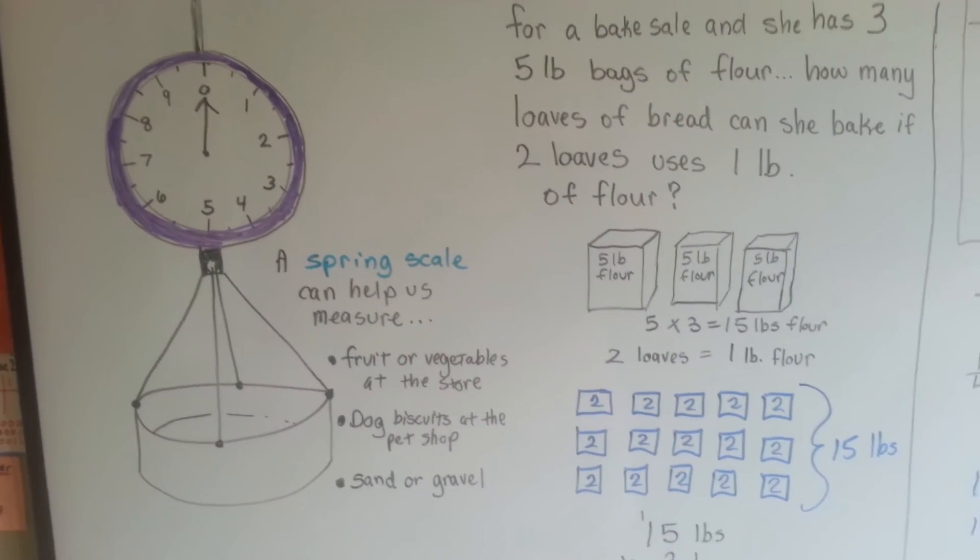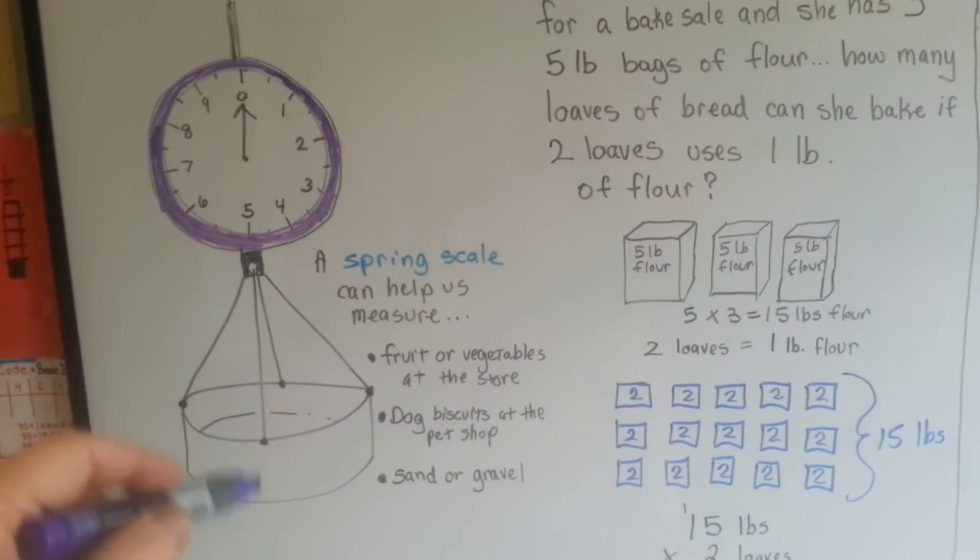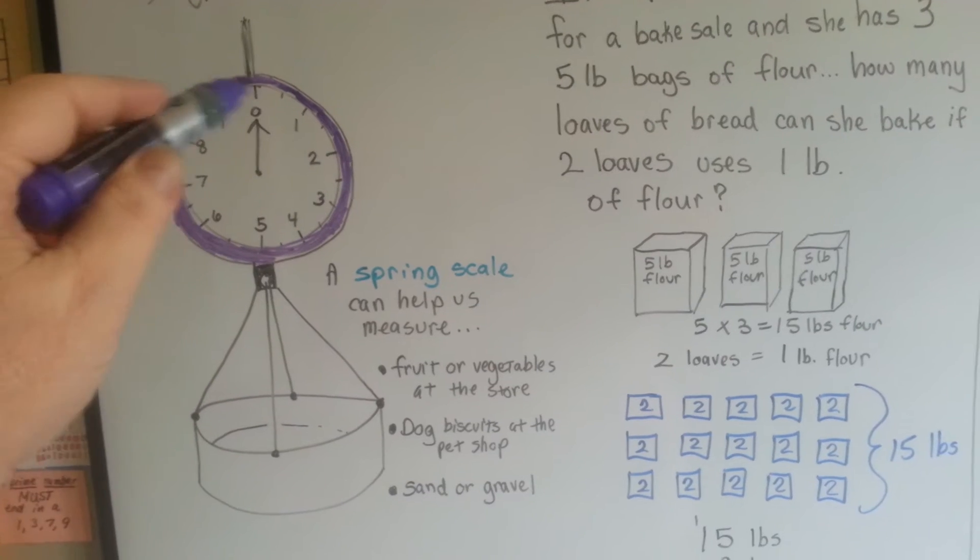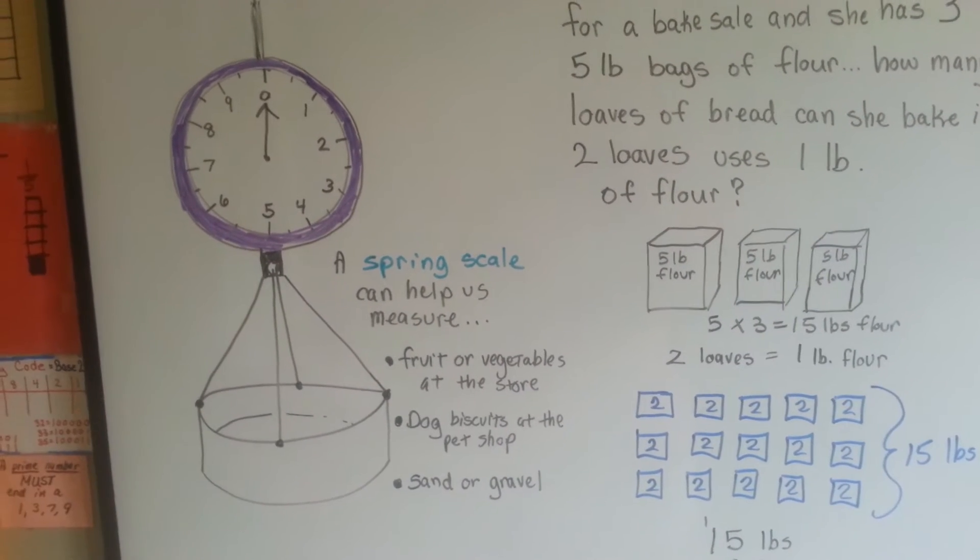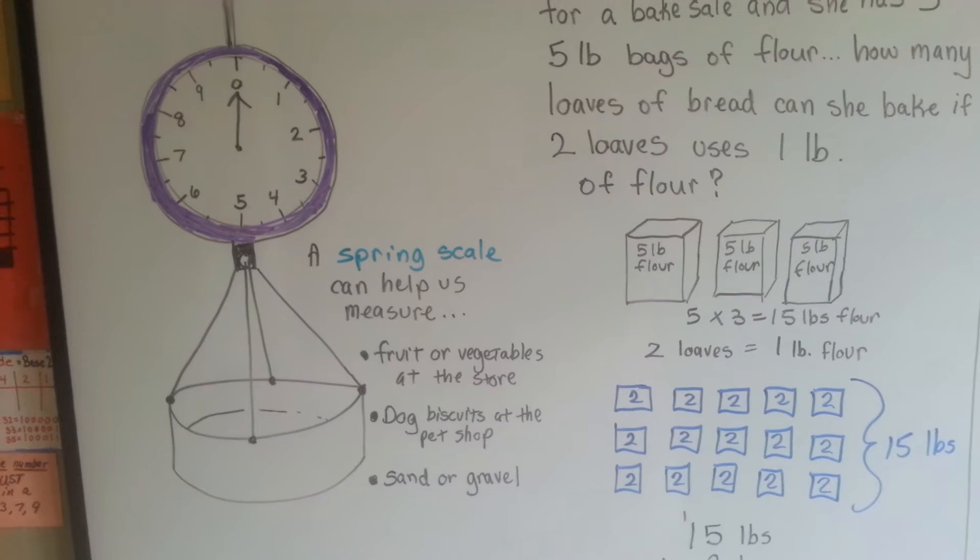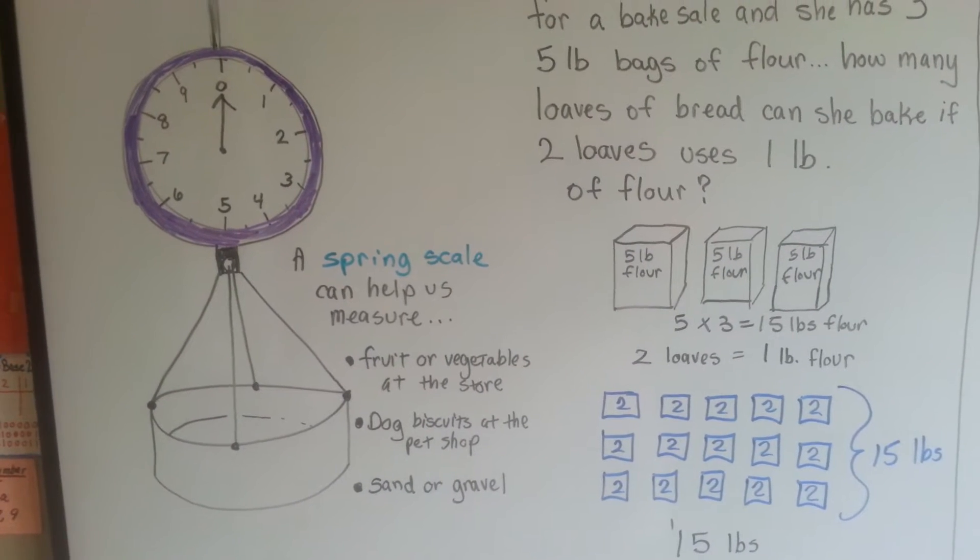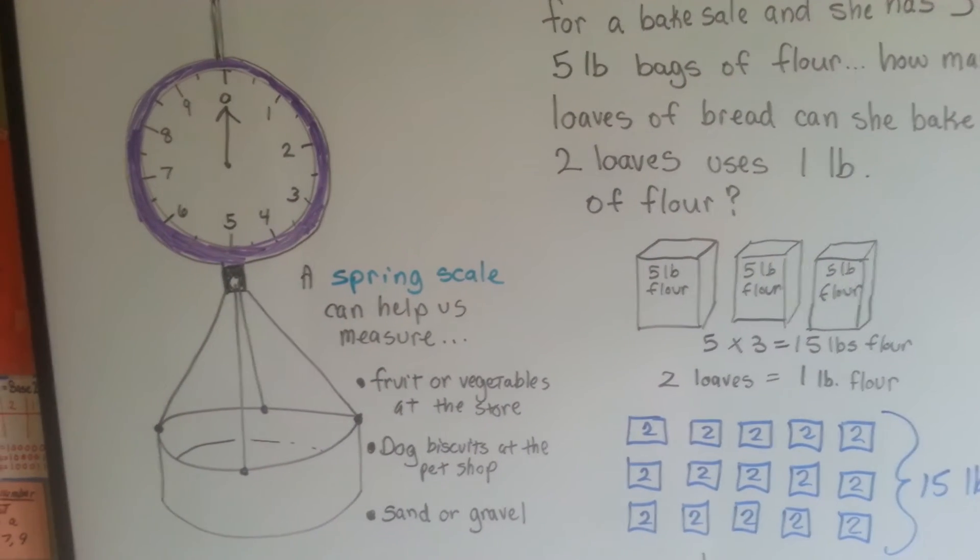Have you ever been at the grocery store and seen a scale that looks like it has a clock on it? Well, that's a spring scale. It can help us measure fruits or vegetables at the store, dog biscuits at the pet shop, or sand and gravel at a hardware store.